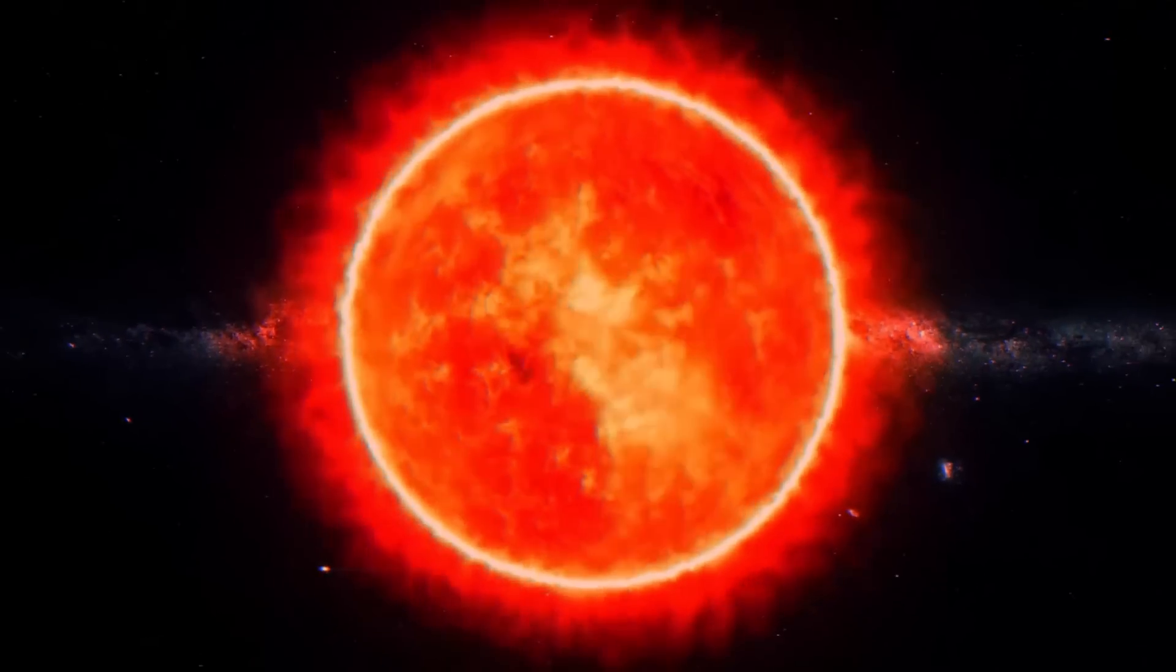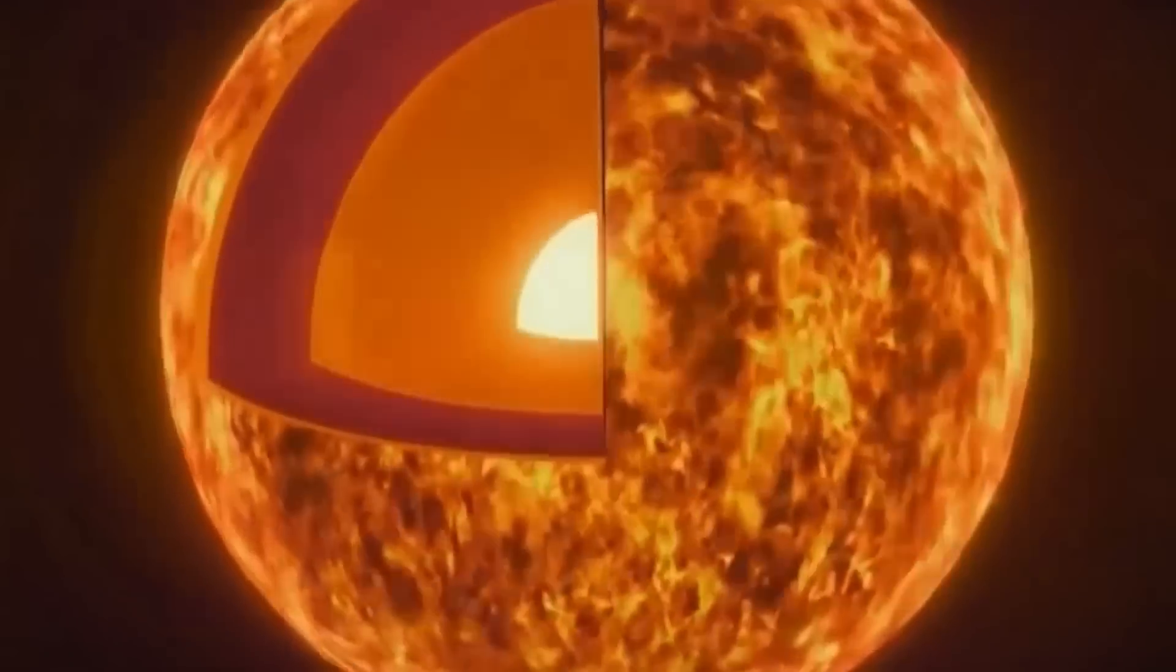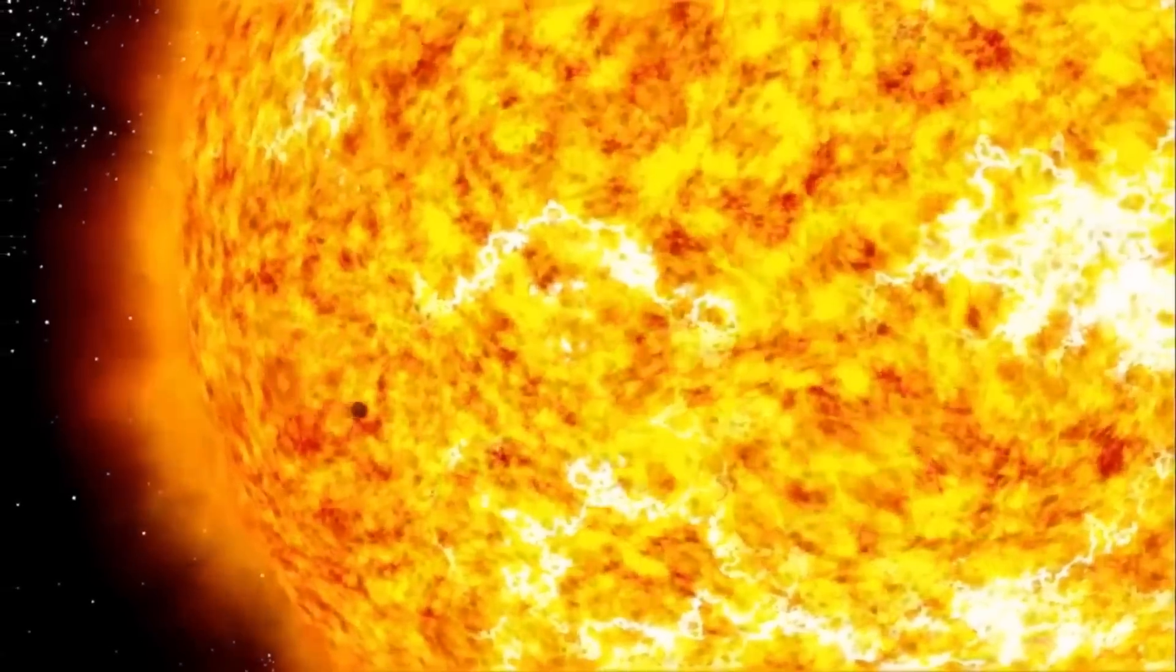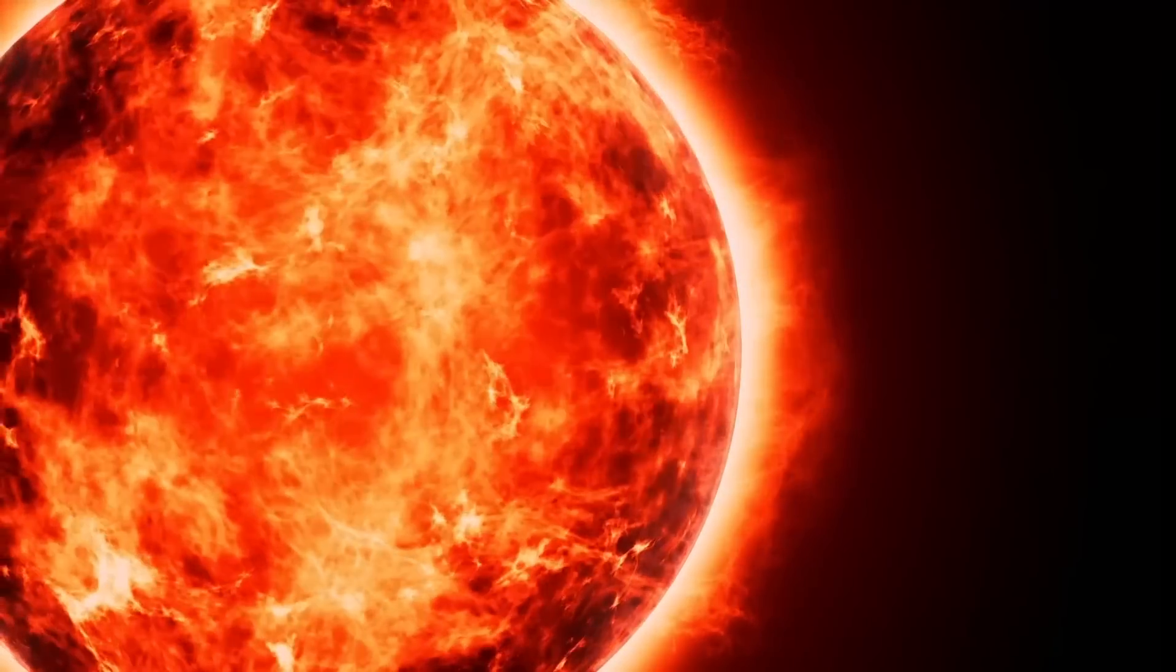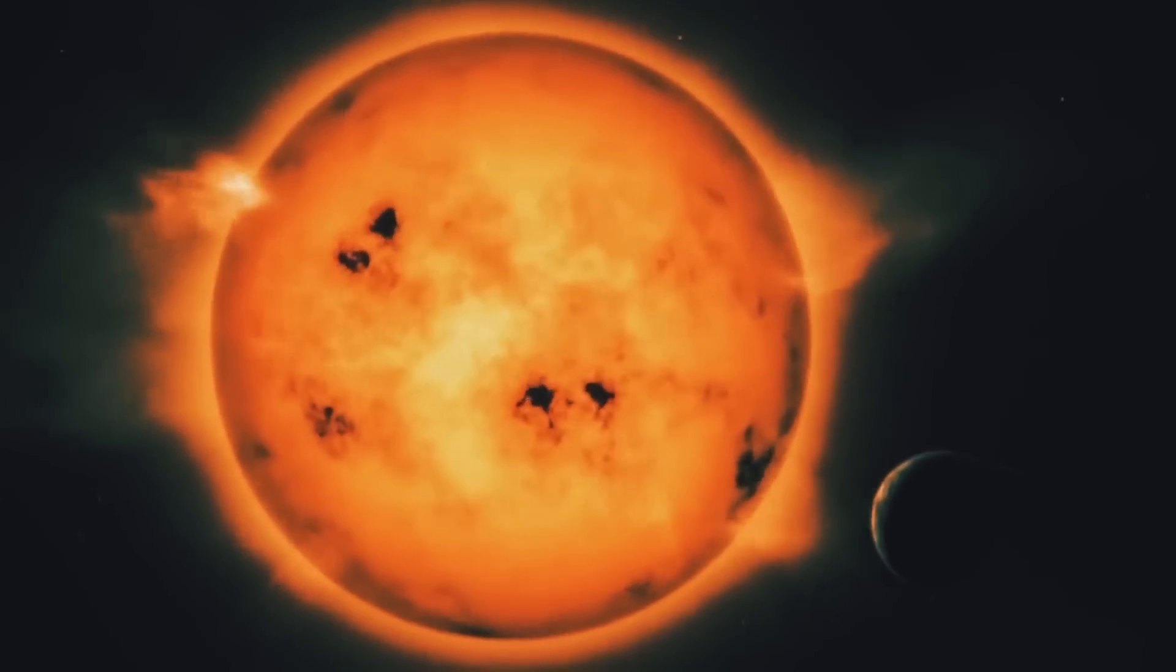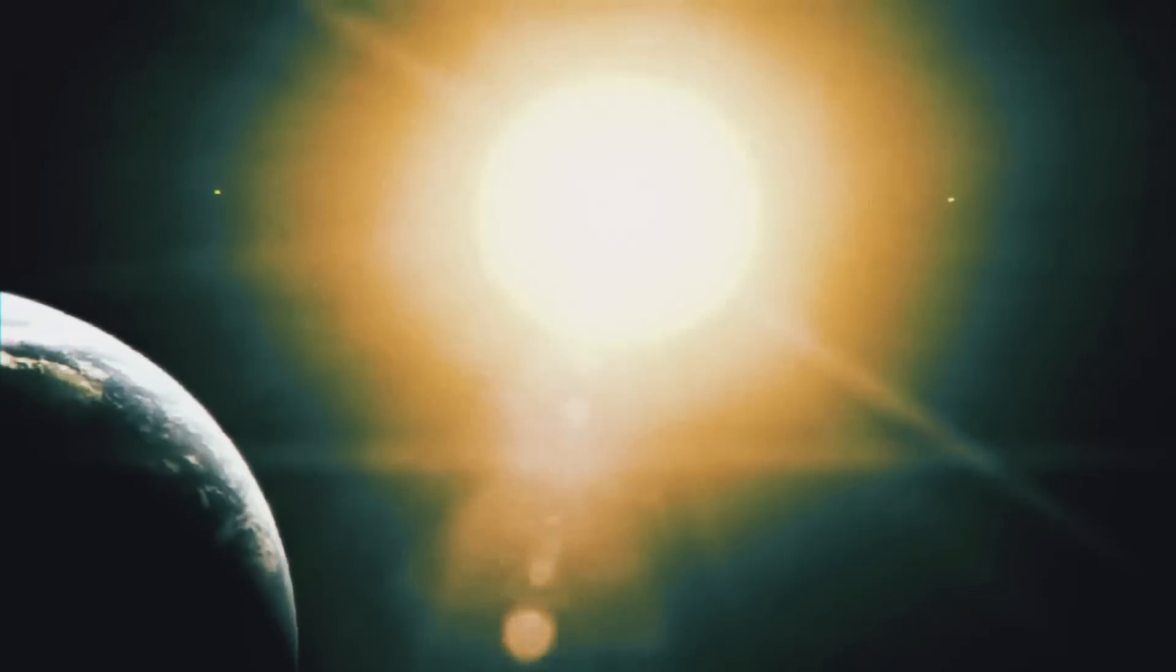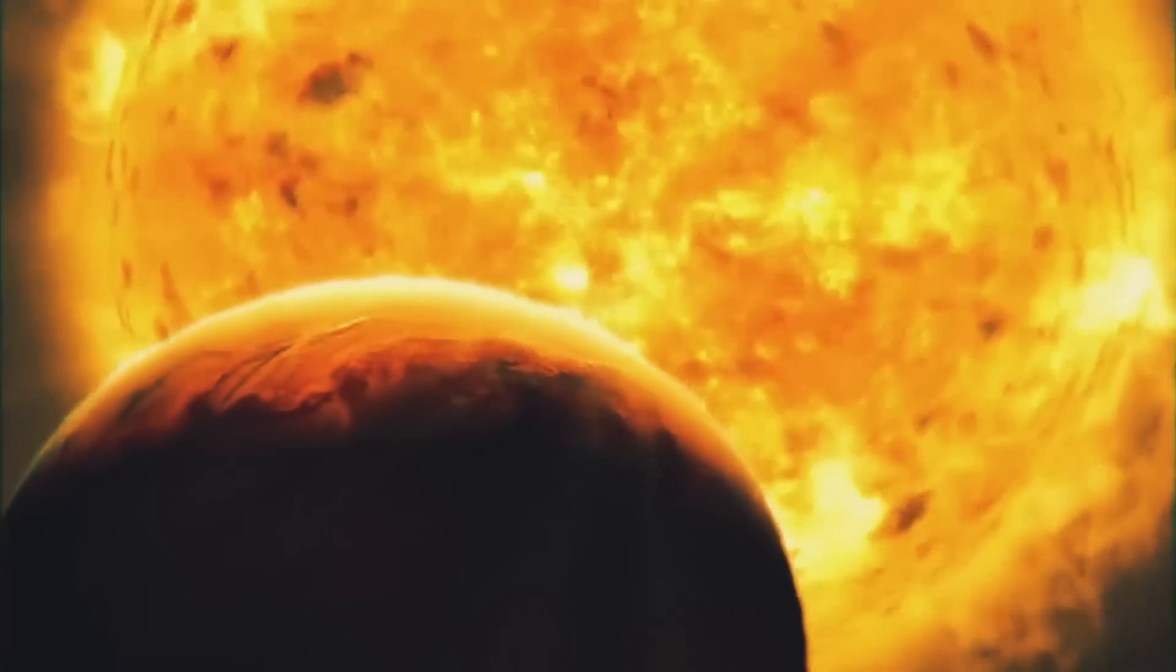As our star matures into a red giant, compressional forces at its core will eventually let its surface spread outward. Our Sun, which is currently white-hot, will eventually cool and turn hotter. Eventually, though, it will drag Earth into a fiery catastrophe with its enormous red surface growing bigger and burning hotter in the process.